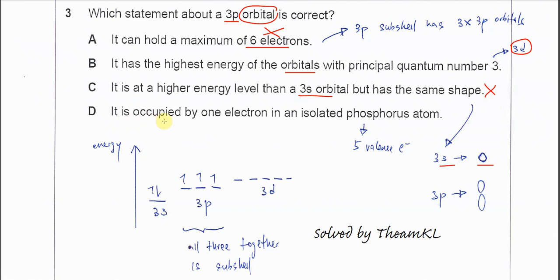Okay, the last one: it is occupied by one electron in an isolated phosphorus atom. So we know that phosphorus atom has five valence electrons. So it's 3s² - two electrons occupied in 3s, and the remaining three electrons is going to fill up.